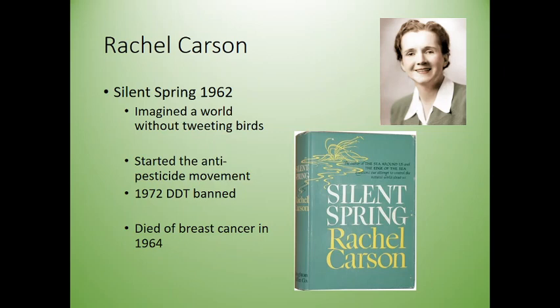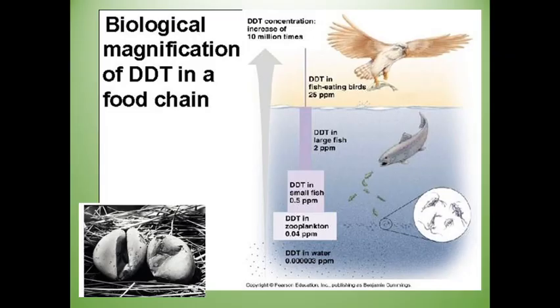The anti-pesticide movement started in the early 1960s. Post-World War II, we started using pesticides to great effect all over the world, especially in the United States, but we didn't start recognizing the impacts until the 1960s. Rachel Carson wrote a book called Silent Spring — a huge bestseller — that imagined basically a world without singing birds.